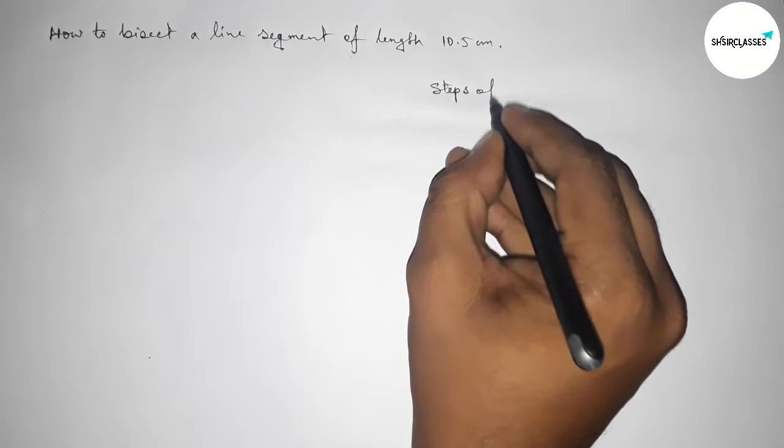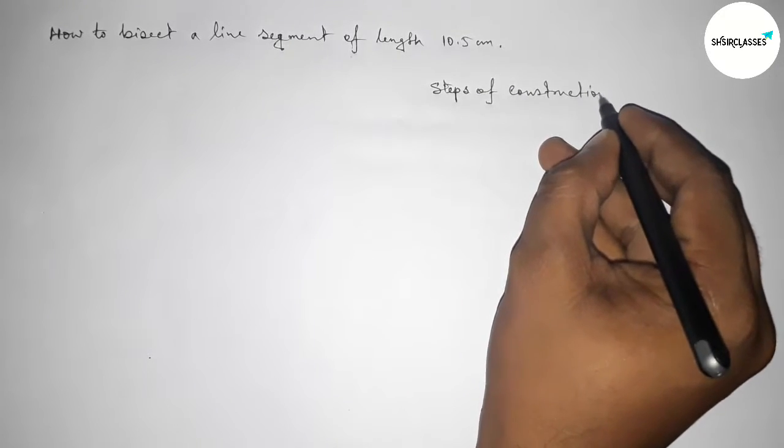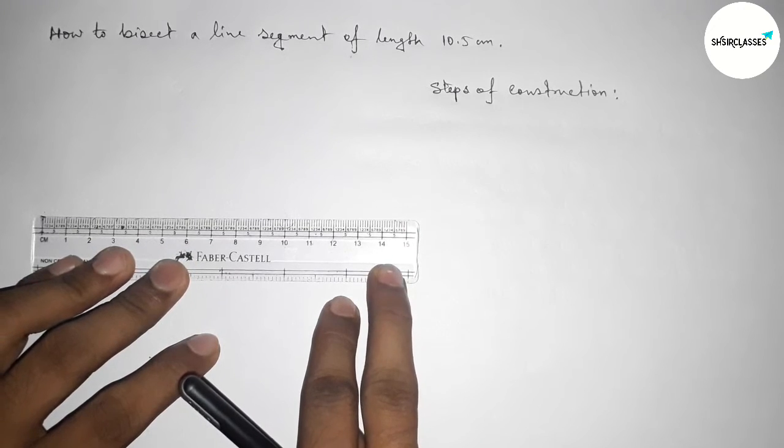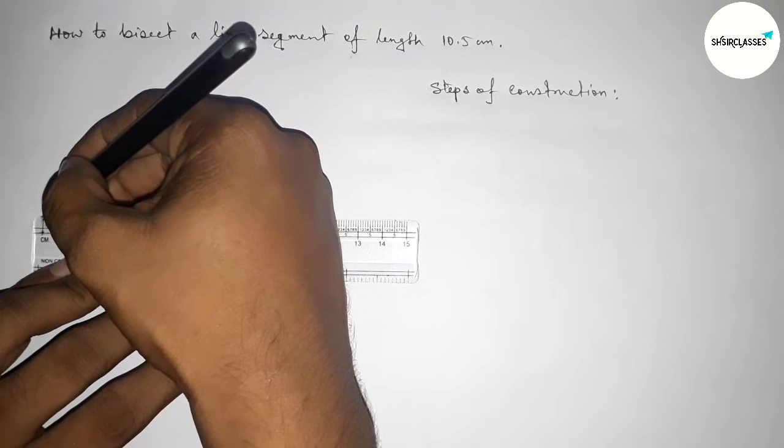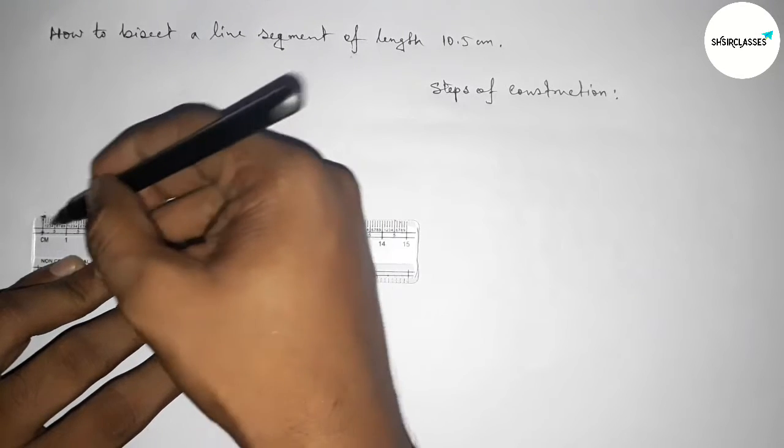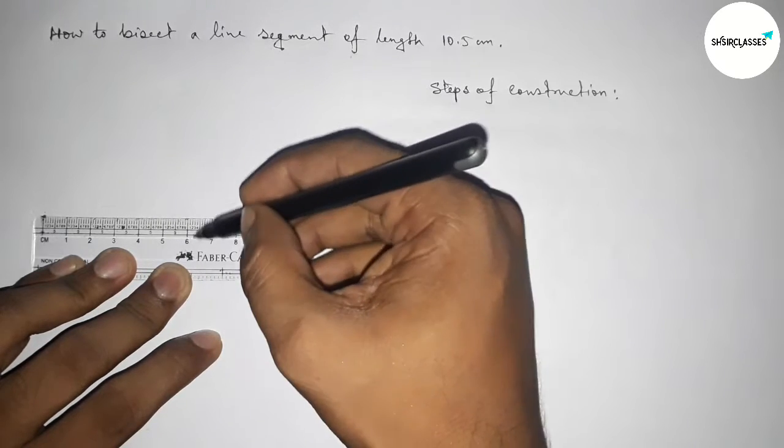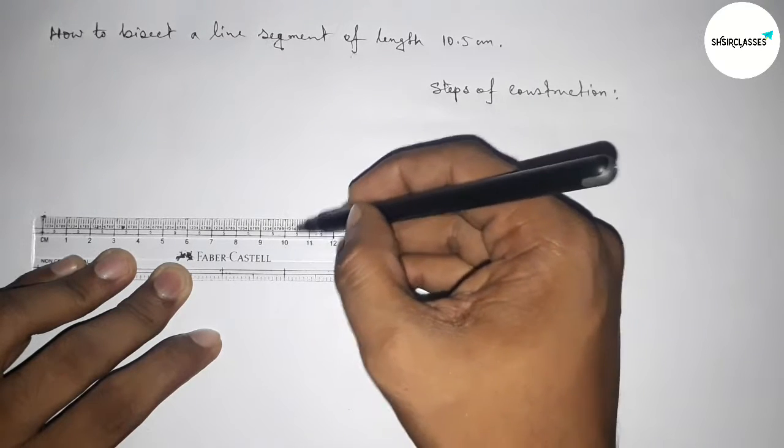So now first we have to draw here a line segment of length 10.5 centimeters. This is starting zero, and this is one, two, three, four, five, six, seven, eight, nine, ten, and this is 10.5 centimeter line segment.